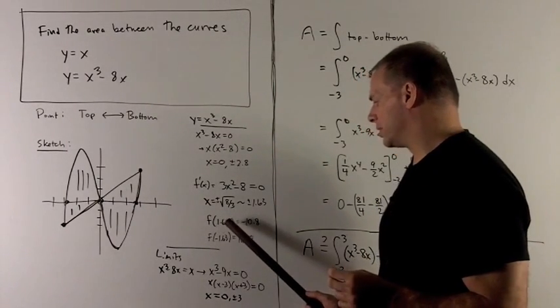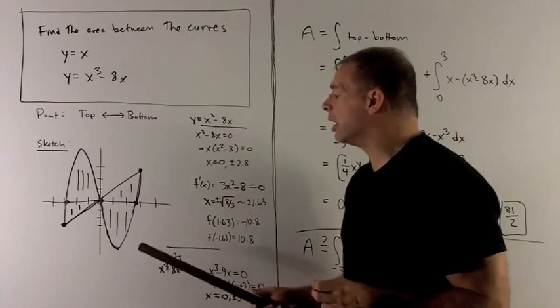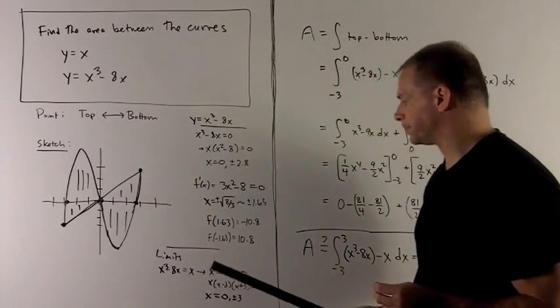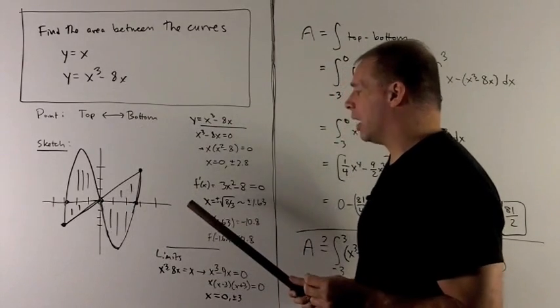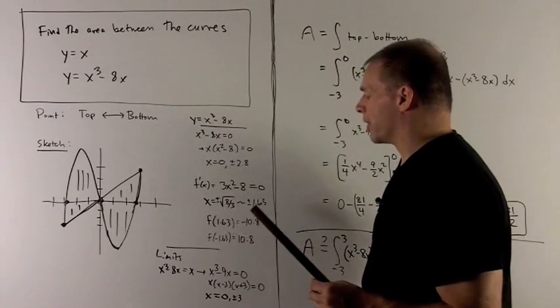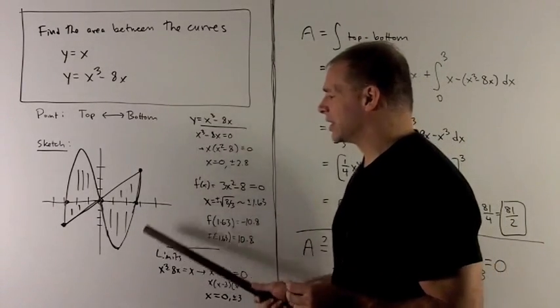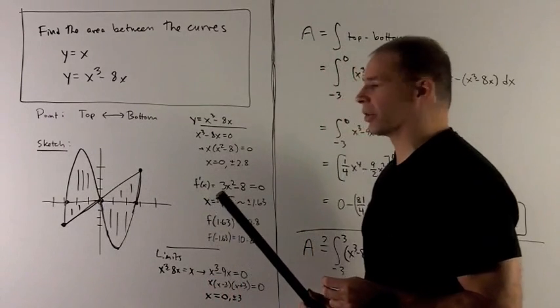So 1.63 minus 10.8 is there, and the other point is up here. If you notice, we have enough points now, knowing where the critical points are, to just connect the dots and get a good idea of the rough shape of the curve.